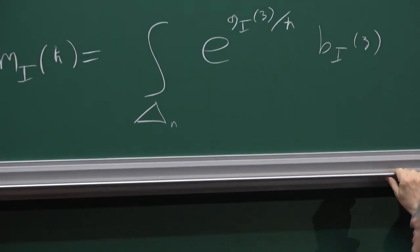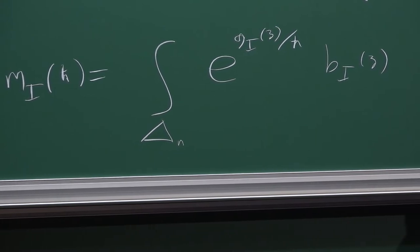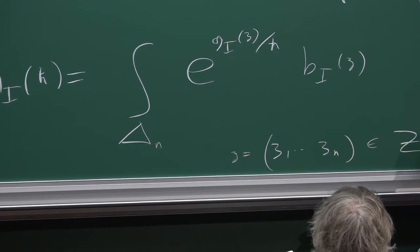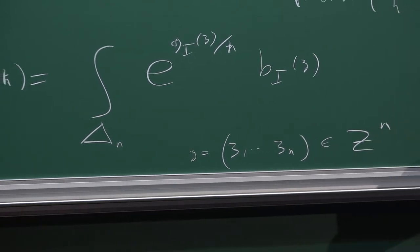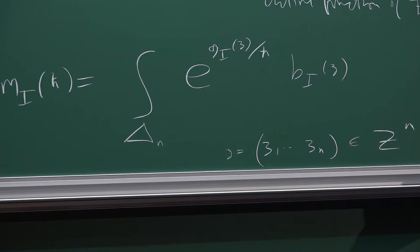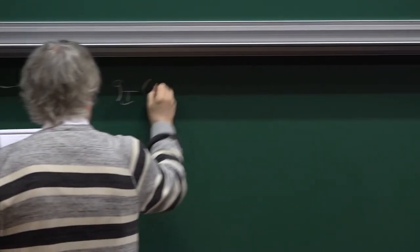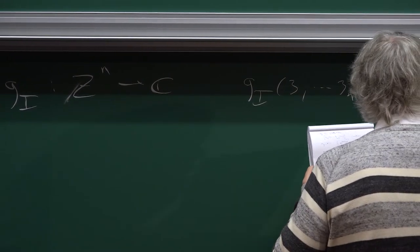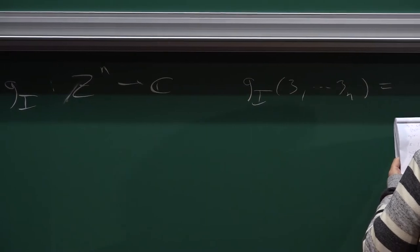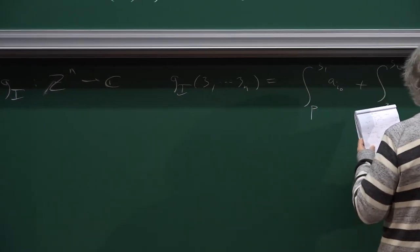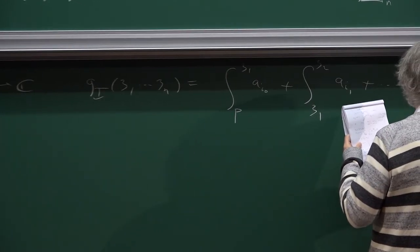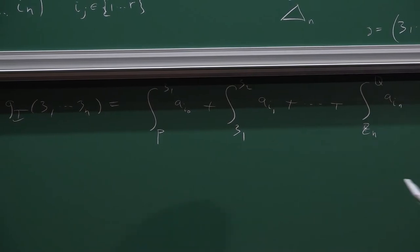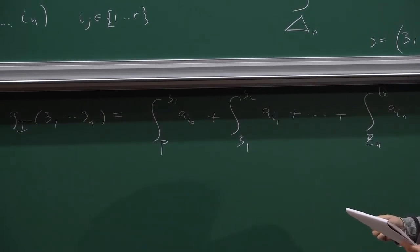What are the terms in this formula? Z means Z1 through ZN — a point in Z to the N. G_I is a function from Z to the N into C. G_I of (Z1, ..., ZN) equals the integral from P to Z1 of A_{i0}, plus the integral from Z1 to Z2 of A_{i1}, and so on. On the spectral curve you should take the universal cover where the different diagonal terms are distinct.